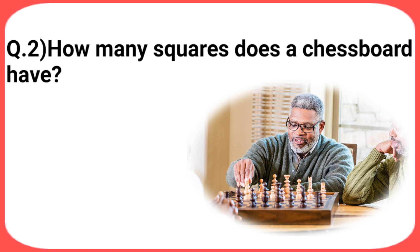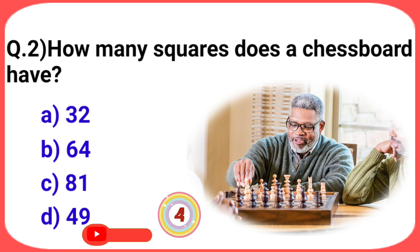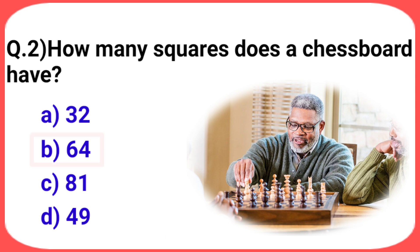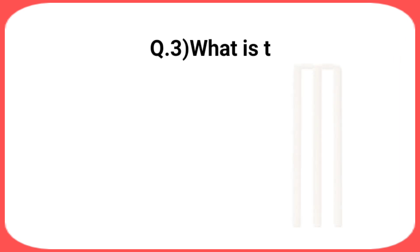Next question: how many squares does a chess board have? Your options are: a) 32, b) 64, c) 81, d) 49. The answer is option b: 64.